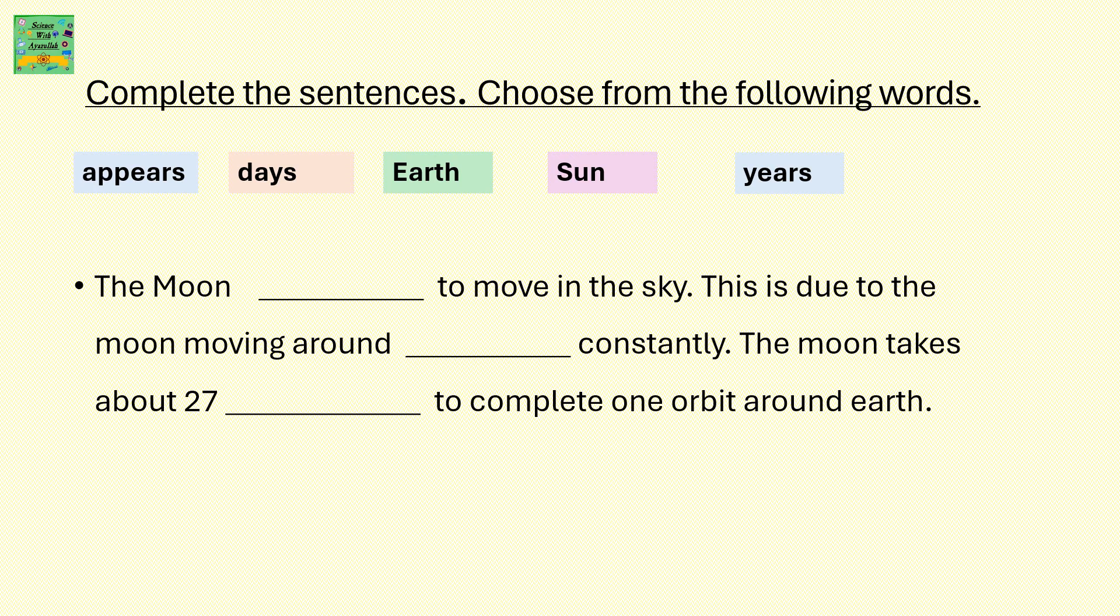The moon appears to move in the sky. This is due to the moon moving around earth constantly. The moon takes about 27 days to complete one orbit around the earth.